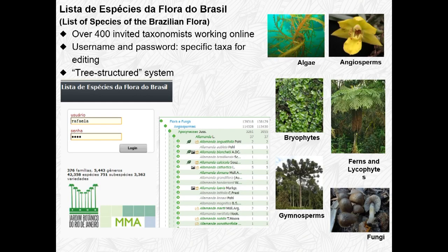We had over 500 invited taxonomists working online. Every taxonomist had specific access inside the platform — they only accessed certain taxa they worked with, and were invited based on the work they had been doing. It was structured so that a species could only be under its genus, and a valid genus could only be under a certain family, including fungi — it's flora and fungi. This prevented mixed information in the taxonomy.